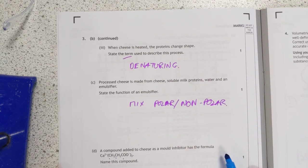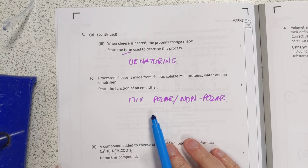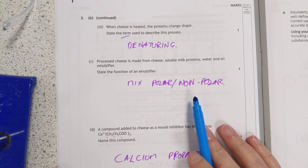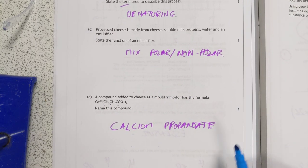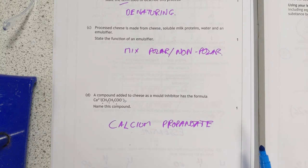Denaturing is changing shape. The function of an emulsifier is to mix a polar and a non-polar substance together. Or equivalent of that, hydrophobic, hydrophilic, whatever, something along these lines. This is calcium propanoate, that's salt there.